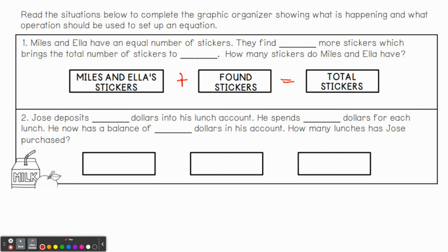What about this one? Jose deposits blank dollars into his lunch account. He spends blank dollars for each lunch. He now has a balance of blank dollars in his account. How many lunches has Jose purchased? So we could write something like, well, he's got a lunch deposit. He's putting money in. And then there's the cost of the lunches. If there's a cost of the lunches and he spends this, are we going to be adding these two or subtracting? Hopefully you're saying subtracting. If he spends the dollars that he put in, that means he's taking away. And so that equals his lunch balance.